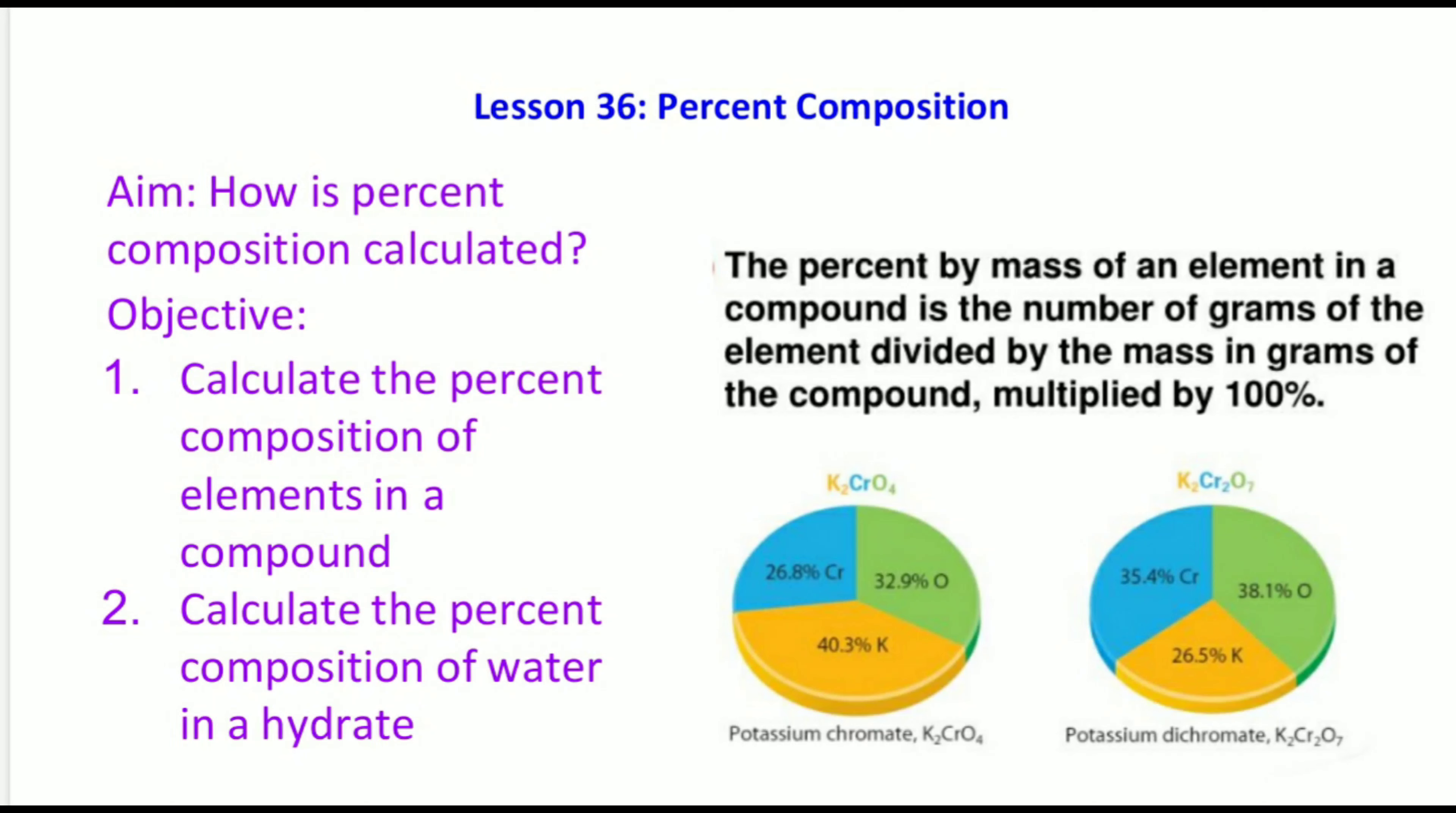As you can see in the diagrams to the right, percent by mass represents the total mass of each element in a compound. Here we have two different pie charts representing two different ionic compounds. Each ionic compound has a polyatomic ion in it. The ionic compound to the left is called potassium chromate, while the ionic compound to the right is called potassium dichromate. We know that these compounds have different names, different formulas, and different physical and chemical properties. They also have different percent compositions by mass.